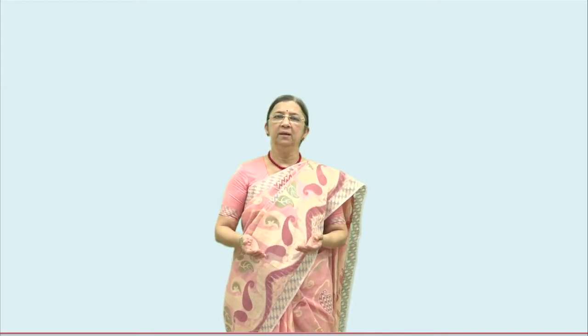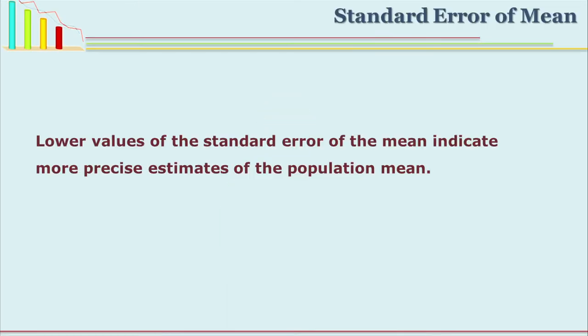Standard error of mean gives you understanding of how far you are correct in estimating the population mean. We are only estimating because we do not know exactly the population mean — otherwise we would have studied the whole population. We are not able to study it because population is huge, it is spread out, it will take a lot of time and money. So we take a random sample, as far as possible a representative sample, so that the generalizability from sample to population is high.